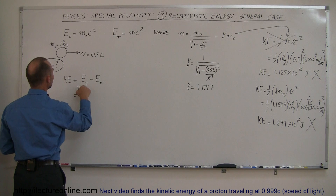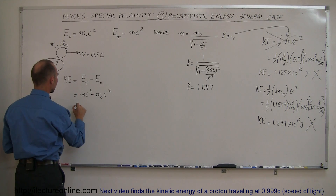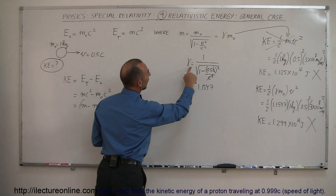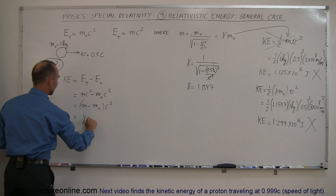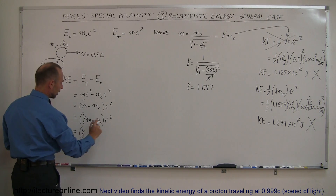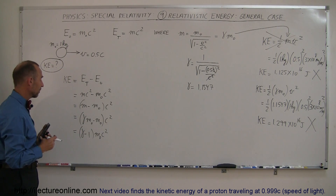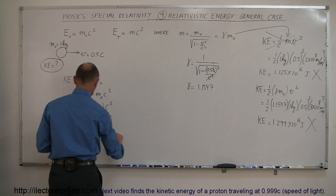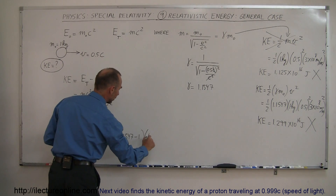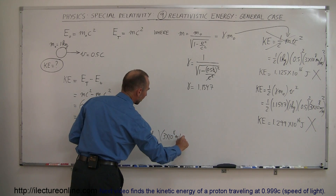So kinetic energy equals total energy mc² minus rest mass energy m-naught c². We can factor out c², giving KE = (m − m-naught)c². Since the relativistic mass m equals gamma times m-naught, this becomes KE = (gamma × m-naught − m-naught)c², which simplifies to KE = (gamma − 1) × m-naught × c². Plugging in gamma = 1.1547, that is 1.1547 minus 1, times the rest mass of 1 kilogram, times (3×10⁸ m/s) squared.